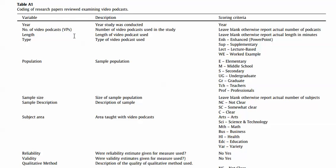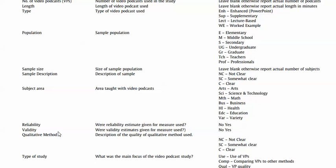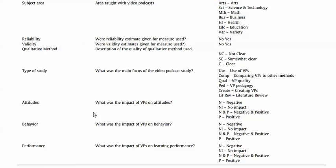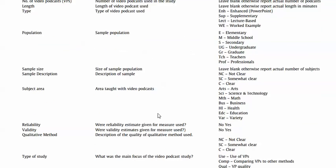I would actually have lines for each of these if I were creating it in a project format. The population, how it's been coded, the sample size, reliability, qualitative method, and type of study — those are all the ways the articles have been coded.